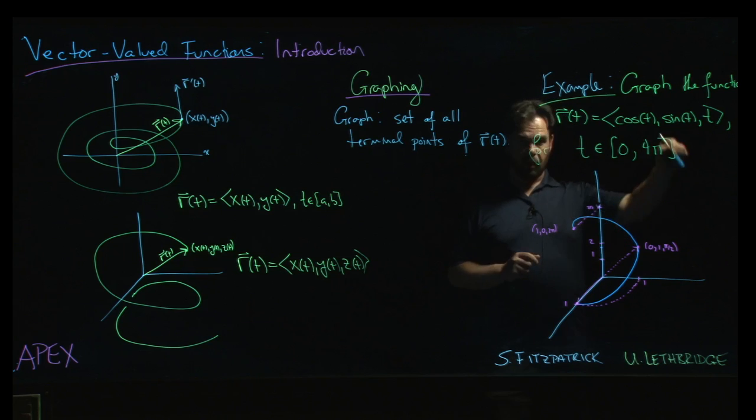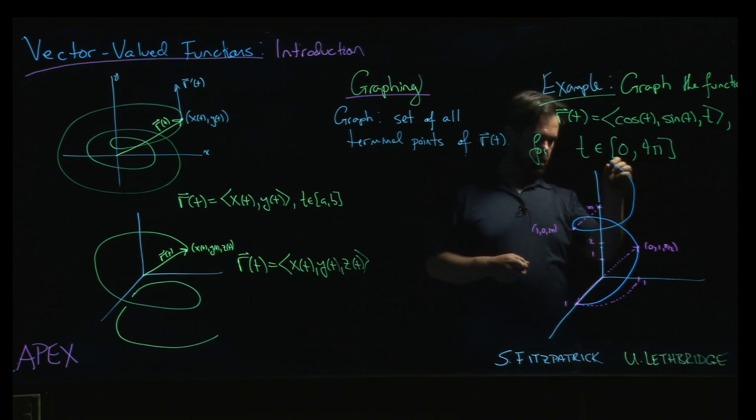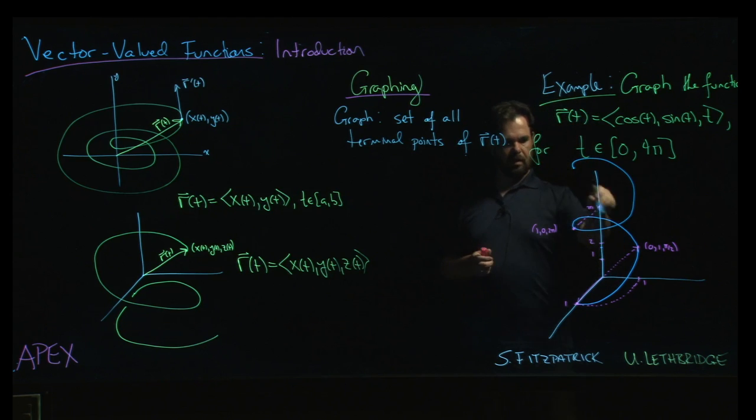And then we're going to go around one more time, going from two pi to four pi, and we end up something like that, right? So we kind of have this corkscrew that goes twice around. That's the graph of our vector-valued function in this case.